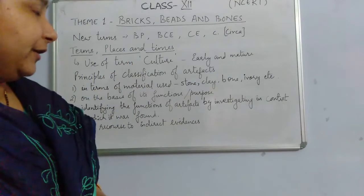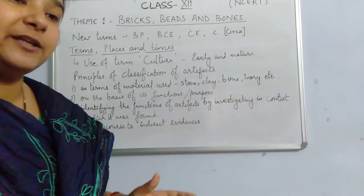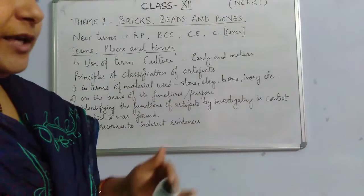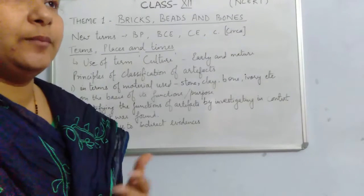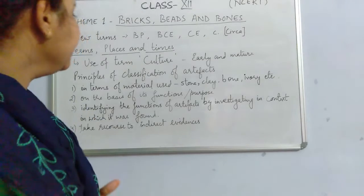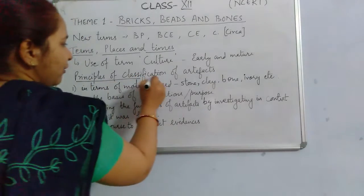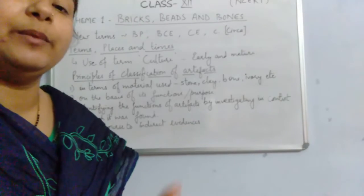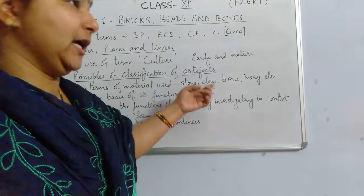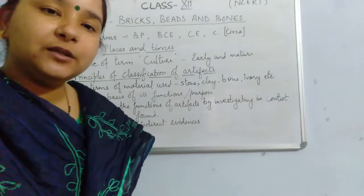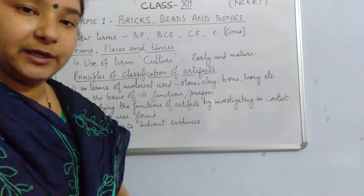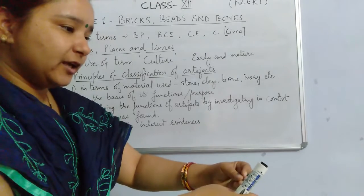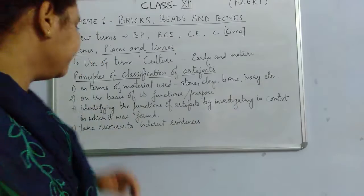'Culture' is used by historians to describe objects found in excavation that have similarities — these are grouped into one category. The classification of artifacts is based on certain principles. The first principle is the type of material used: whether the artifact is made of stone, clay, bone, or ivory. On the basis of the material used, a category is created — for example, stone-based artifacts, bone-based artifacts, and so on.